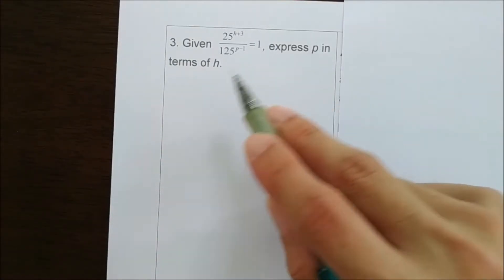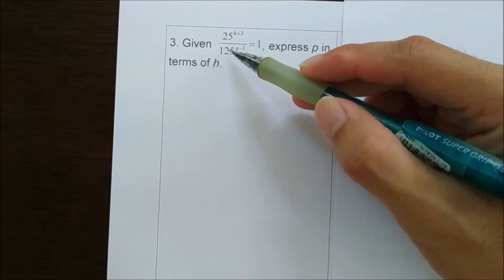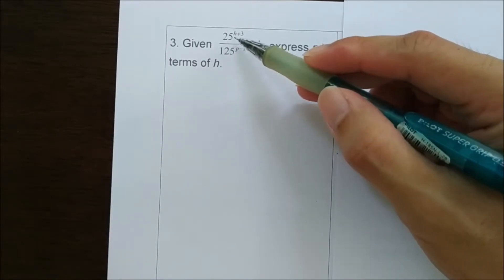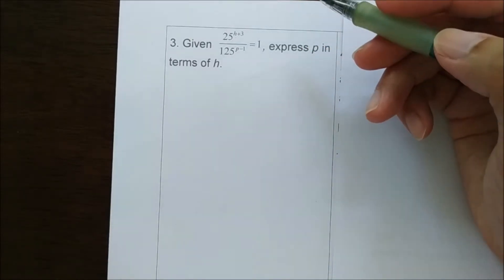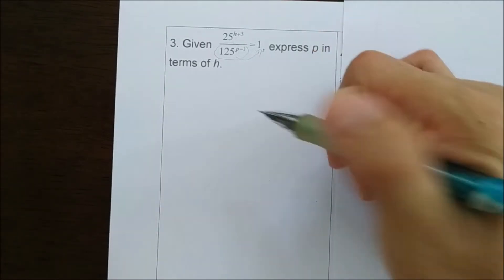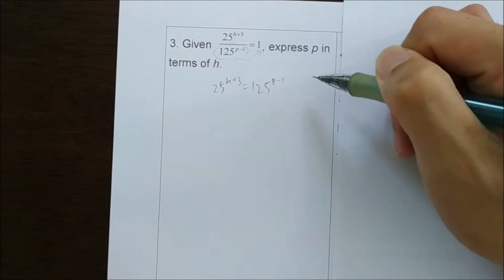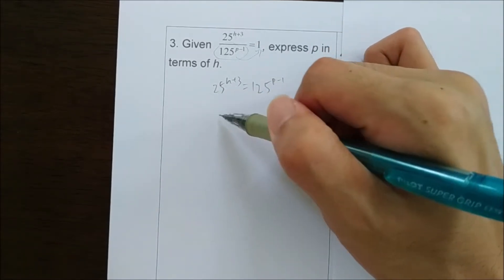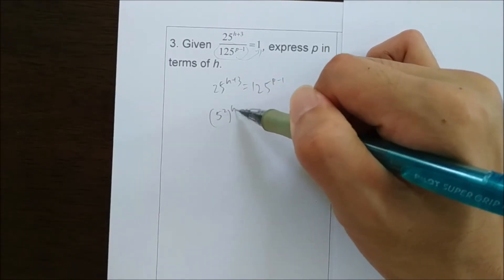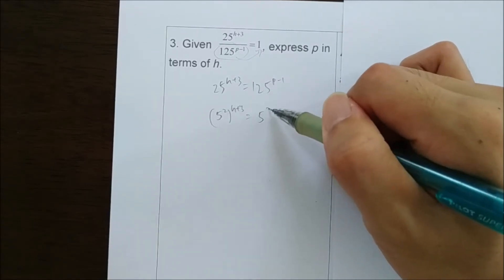Given this, express p in terms of h. So if we can change the two numbers so that they have the same base number of 5, then we can compare the powers. First we try to move this to here. It becomes 25^(h+3) equals 125^(p-1). Then we change 25 to 5 to the power of 2, and 125 is actually 5 to the power of 3.